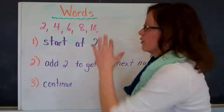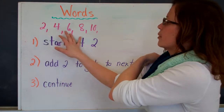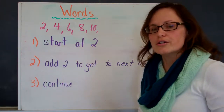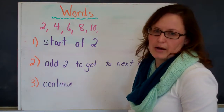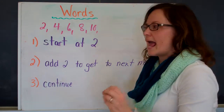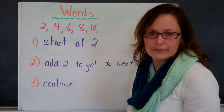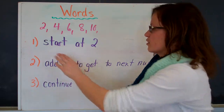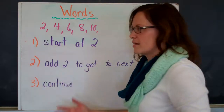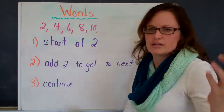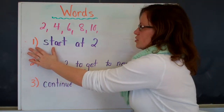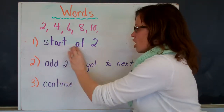Now, describing a number pattern with words. Here's our number pattern: 2, 4, 6, 8, 10, and it continues on. When you're using words to describe a number pattern, the key is that someone else should be able to take your words and create your pattern. The first thing is you need to tell them where to start. This number pattern starts at 2, so the first step is: start at 2.